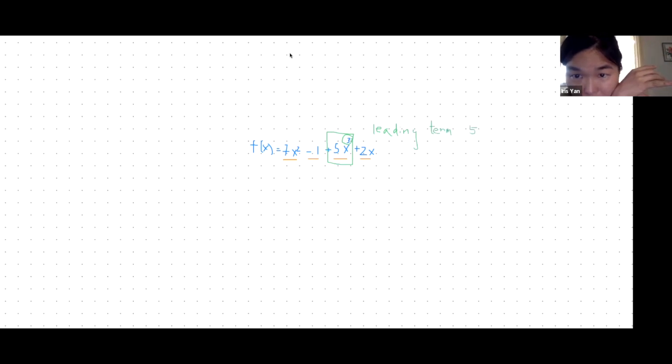And then the degree—the degree—what's the power of x? So degree is 3. The degree of the function is 3. And the coefficient, the leading coefficient, is 5.